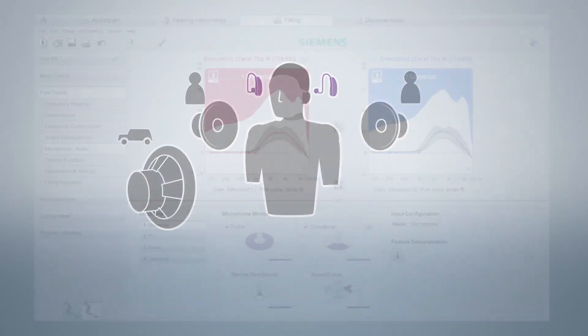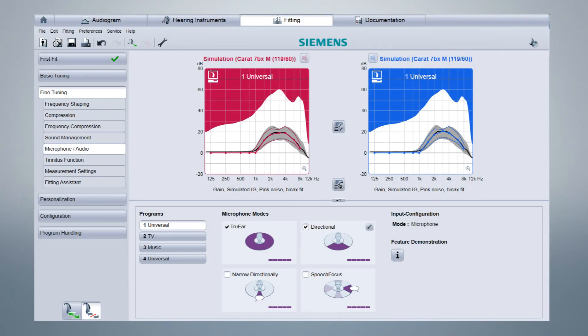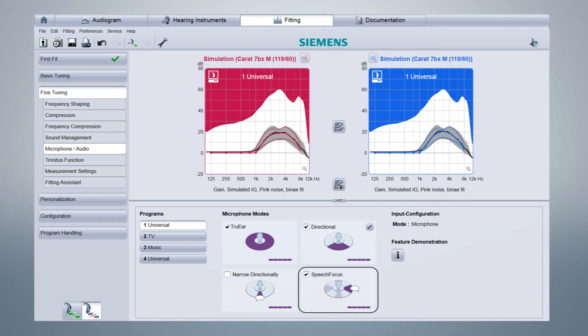Here you see in the Connex software how the simulation was performed. We will compare a directional microphone setting, which is what conventional hearing instruments switch to when they recognize a car situation simply as a noisy situation, to spatial speech focus.